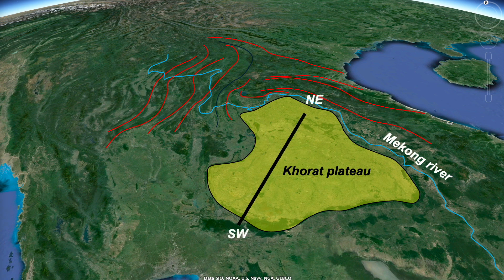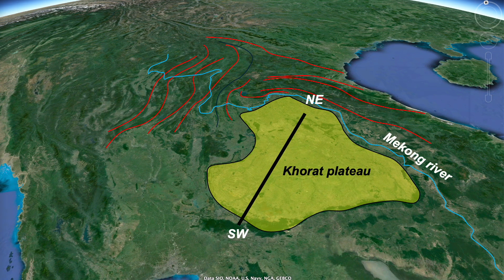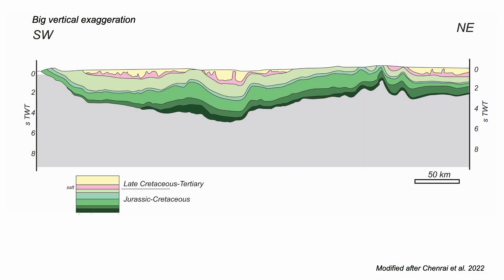So let's consider a profile across the plateau. First, beware being too impressed by the scalar folding. This section has been vertically stretched to help see the structure.